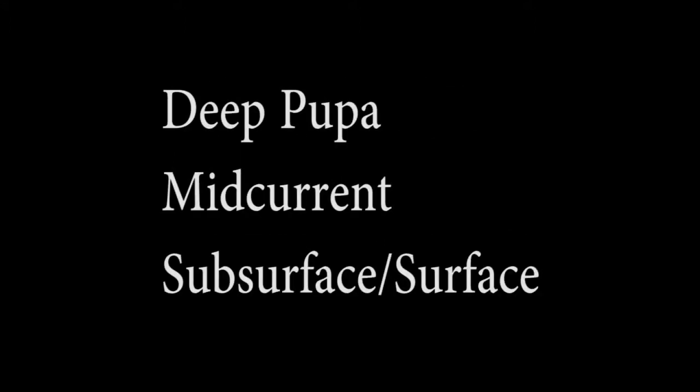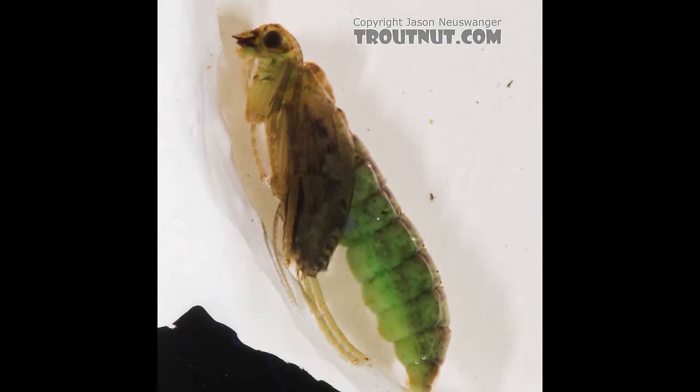At different times during the emergence, we'll want to fish our pupa deep, in the mid-currents, subsurface, and possibly even at the surface. Whether we fish on a dead drift or with a swing is partially dependent upon the species we're trying to imitate. When to fish the caddis pupa is best discussed after we discuss the caddis adult and how to recognize a caddis hatch. We'll do this in the next video, Simple Entomology for the Fly Tier and Fly Fisherman, Part 9. See you soon.